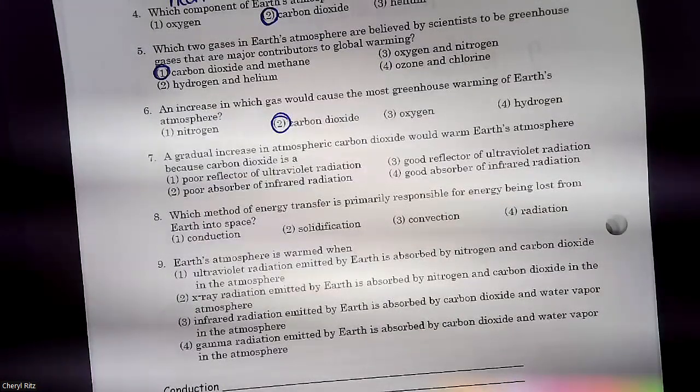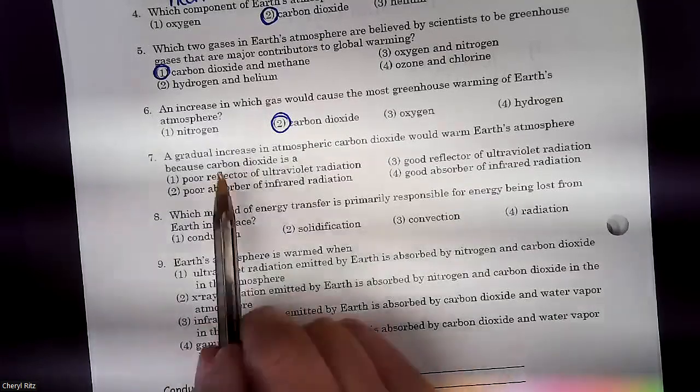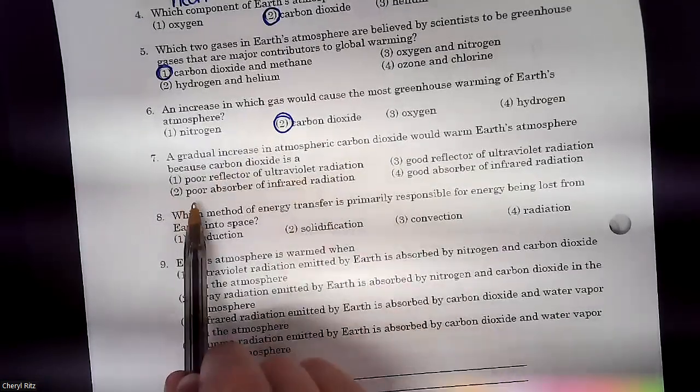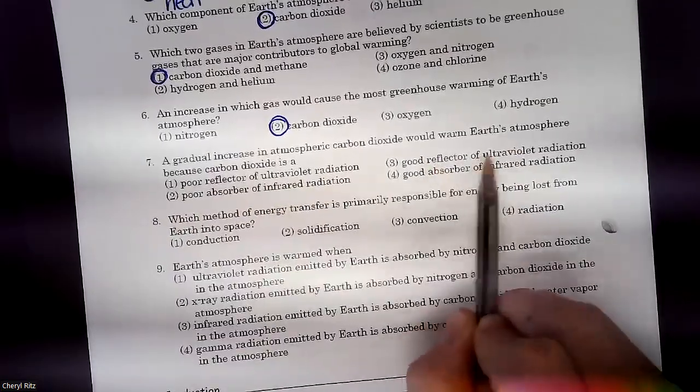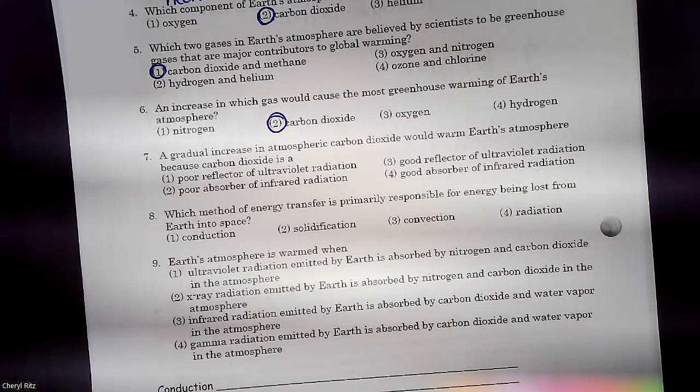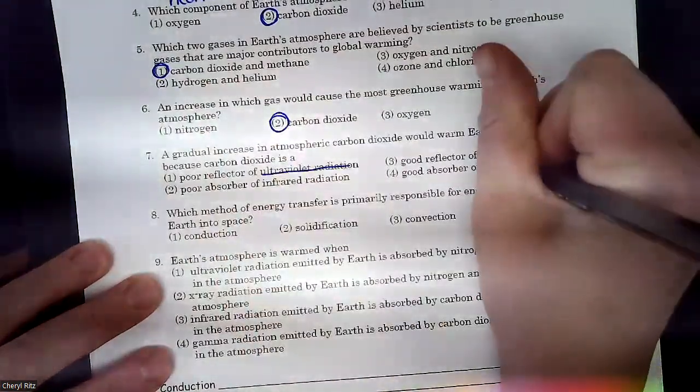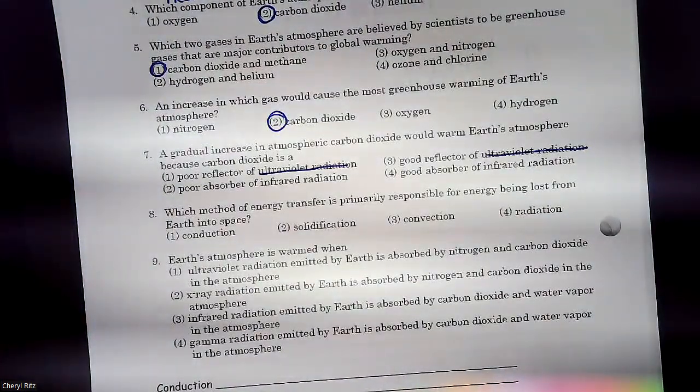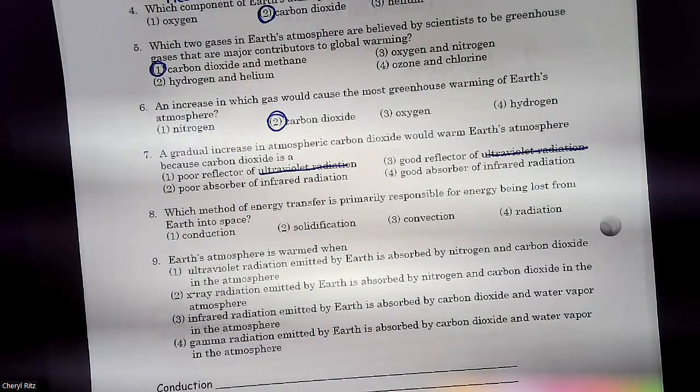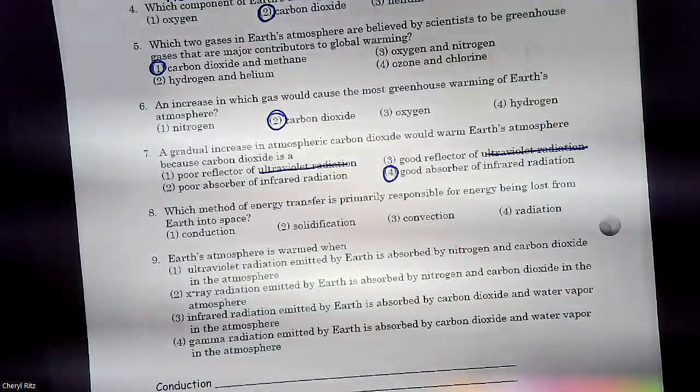Now this next question, a gradual increase in the atmosphere, carbon dioxide would warm Earth's atmosphere? Because carbon dioxide, now let's look at all four answers. Does carbon dioxide deal with ultraviolet or infrared? Which one is carbon dioxide keeping in the atmosphere? It keeps infrared. The heat wave. So is carbon dioxide a good absorber of heat or a good reflector of the heat? No, it actually absorbs it. But that's why it gets warmer. The heat gets stuck with the carbon dioxide and warms up.